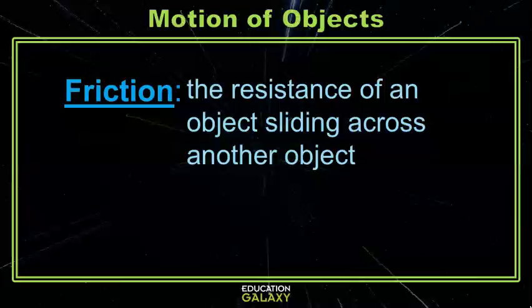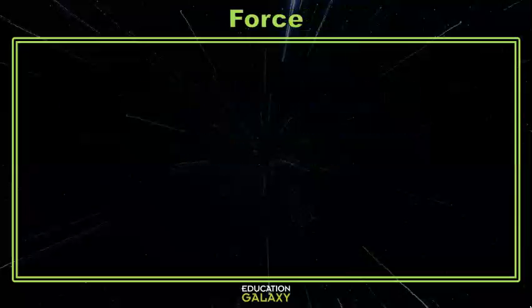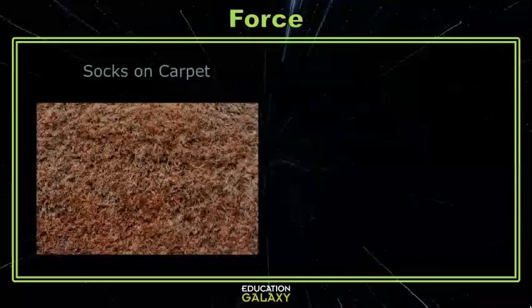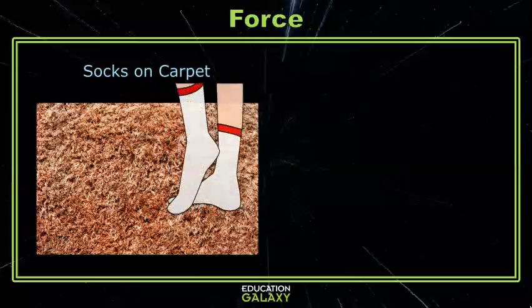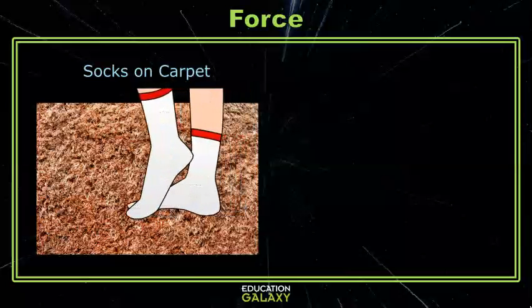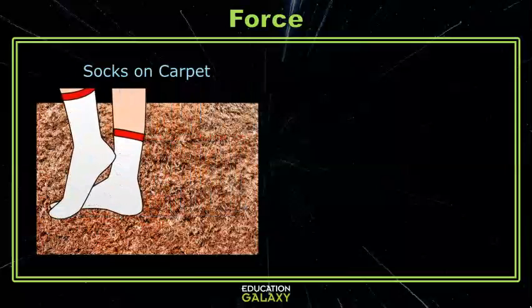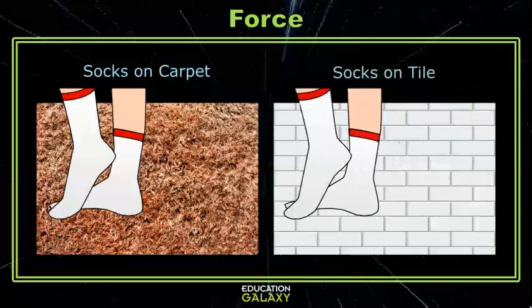Friction is a force that occurs when two objects rub against each other. The force of friction can easily be seen in the difference between scooting your feet across a floor with carpet versus scooting your feet across a floor made of tile or linoleum. Across the carpet, your feet have a much harder time moving, and your legs have to work much harder to provide more force to move less. But on the tile, your feet move very easily, and you can move further using less force. This is where friction comes in.